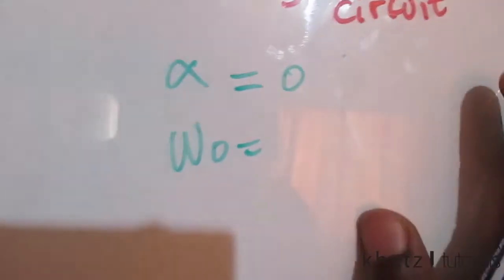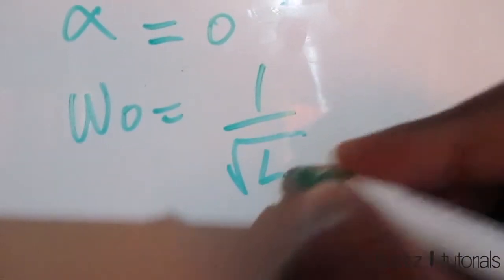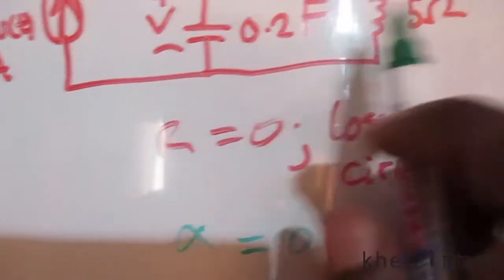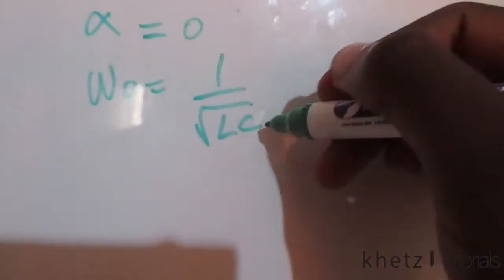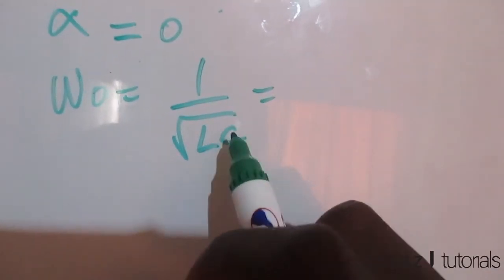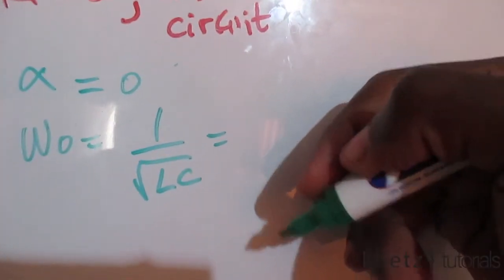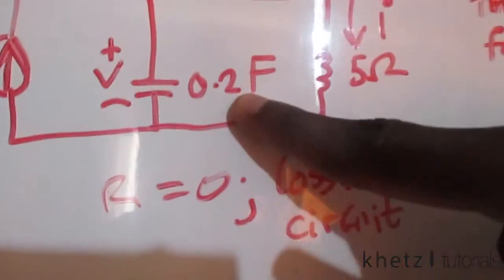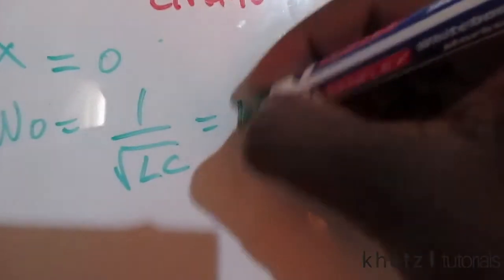We can conclude that the damping factor is zero. Now let's proceed to find the resonant frequency, the undamped frequency. We're going to use this formula and plug in the values of L which is 5 and C which is 0.2. Plugging in the values gives us 1 over the square root of (5 × 0.2), which equals 1 radian per second.